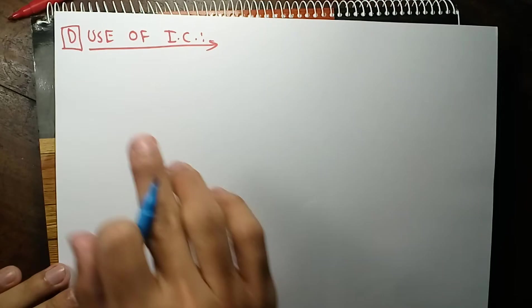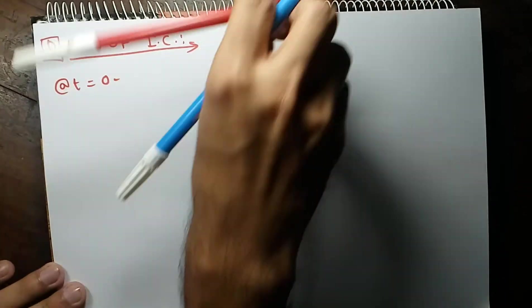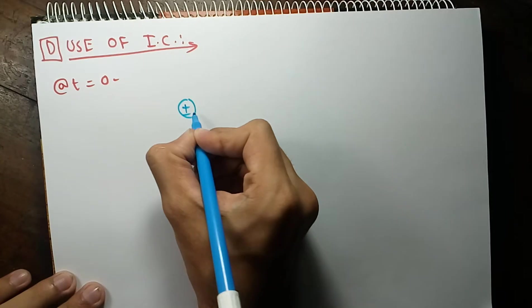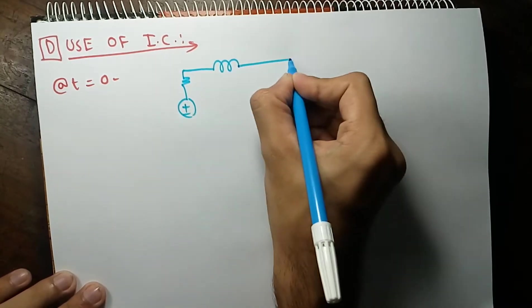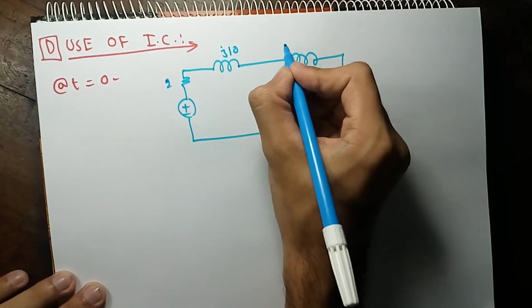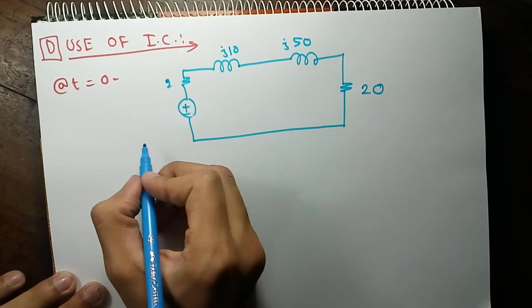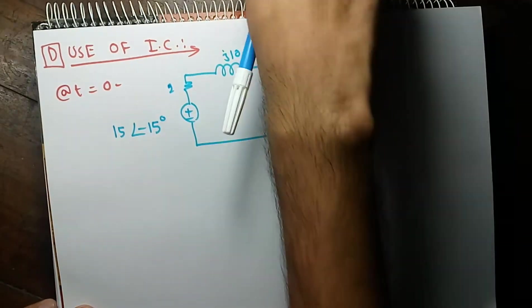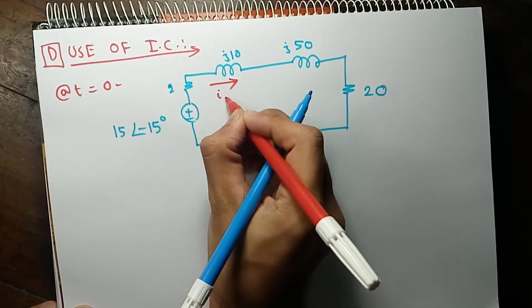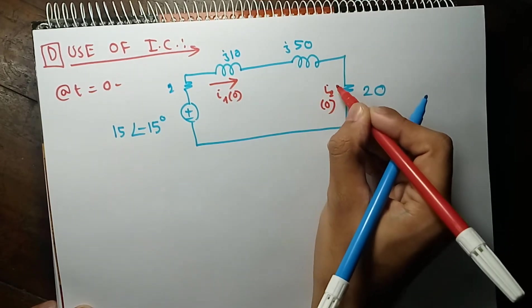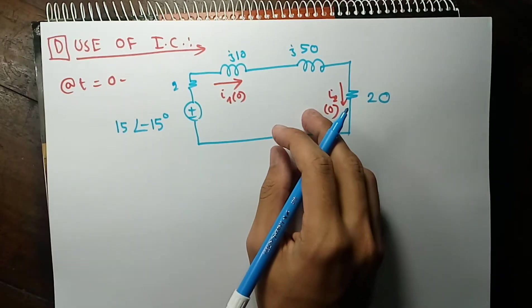The fourth step is the use of initial conditions. To apply initial conditions, let's consider the circuit at T = 0⁻, before switching occurred. It looks like a series circuit with components 2, j10, j50, and 20, and a voltage source of 15∠−15°. I need to find the current through inductor 1 and inductor 2 at T = 0. Both currents will be the same since it's a series circuit.